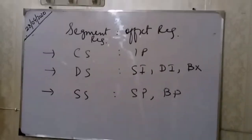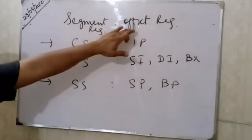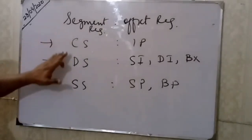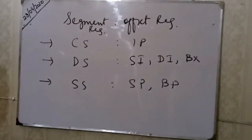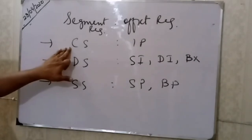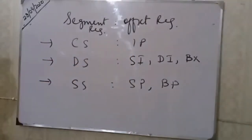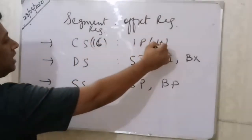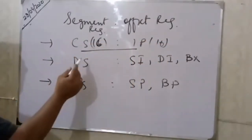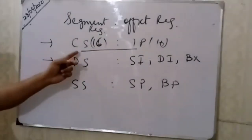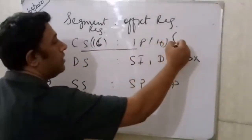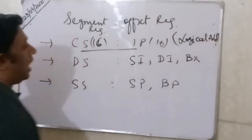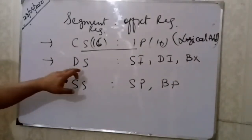Now let's see what we have with the segment registers and offset registers. If you have the code segment register combined with the instruction pointer IP, you get a logical address. The segment registers are 16 bits and the offset is 16 bits. This combination forms what is called the logical address.